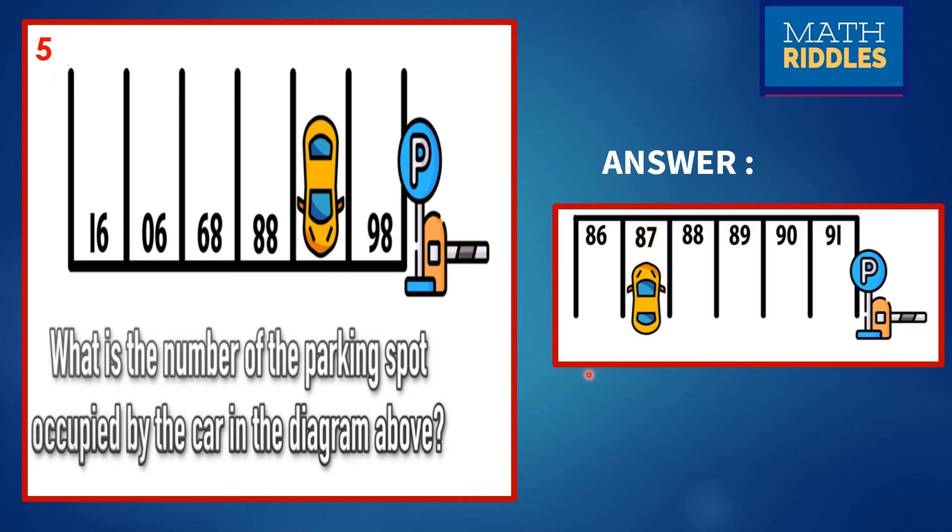The picture you will get the answer. The answer is parking spot number is 87. If you observe here, the entry point is from this side. We will be entering into the parking lot, the opening. This is the part. So when we read the numbers, we will read it as 86, 87, 88, 89, 90, 91. Not as 16, 6, 68, 88. We are not reading from this direction here. We have to go from the opening means where the entry is going on from there. That's it. We have to read the numbers. So the answer, the parking spot number is 87.